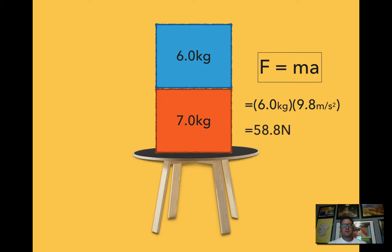So since 58.8 Newtons are being applied downward, that means that there's an upward force of 58.8 Newtons from the 7 kilogram box. As you can see here, I have a negative 58.8 Newtons.